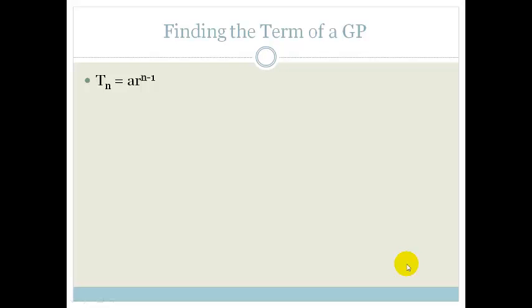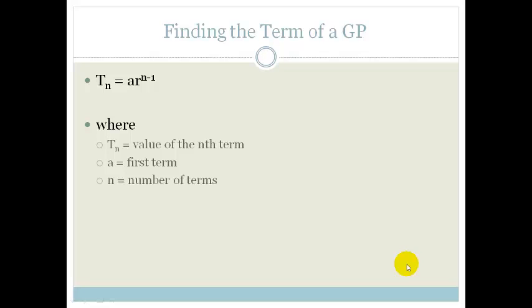So it's Ar to the power of n minus 1, where Tn is the value of the nth term, A is your first term, n is the number of terms, and r is your common ratio.